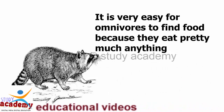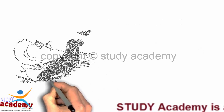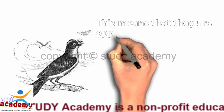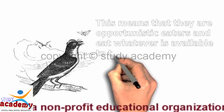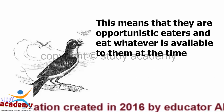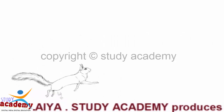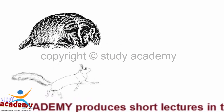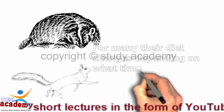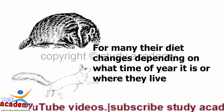It is very easy for omnivores to find food because they eat pretty much anything. This means that they are opportunistic eaters and eat whatever is available to them at the time. For many, their diet changes depending on what time of year it is, or where they live.